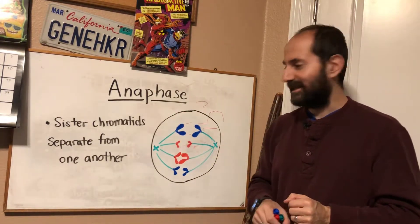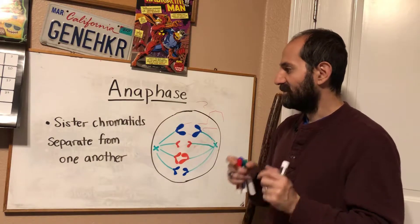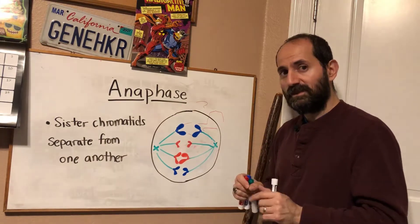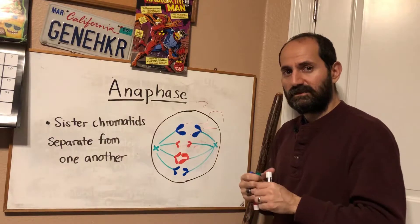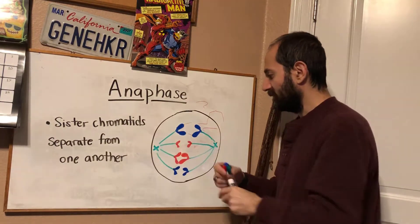Interesting thing to understand. So again, anaphase: sister chromatids separate from one another. They then move themselves with motors inside of their kinetochores to opposite poles of the cell.